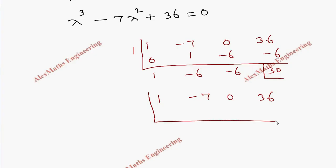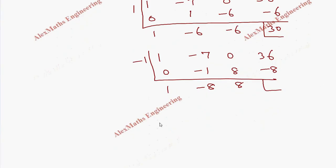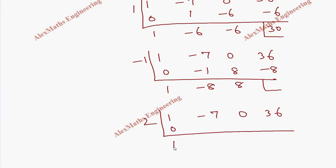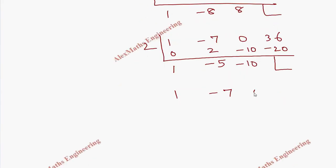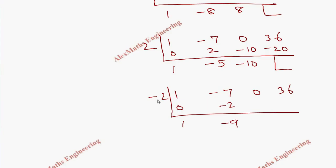Trying lambda equals minus 1: the remainder is not 0. Trying lambda equals 2: the remainder is not 0. Trying lambda equals minus 2: after synthetic division, adding gives minus 9, then 18, then multiply by minus 2 gives minus 36, and adding gives remainder 0. So lambda equals minus 2 is a root.